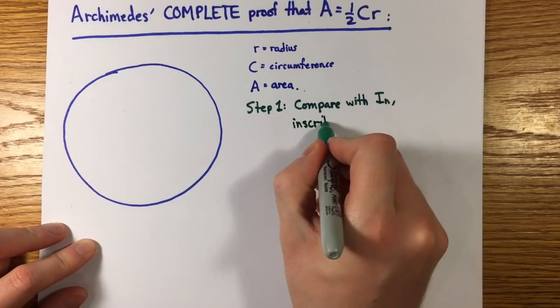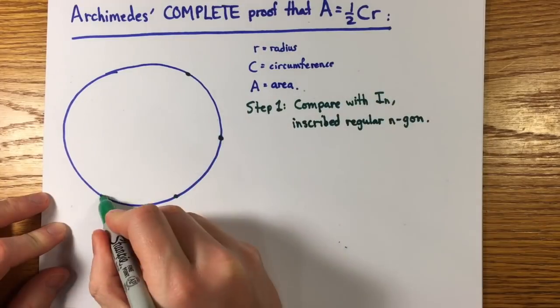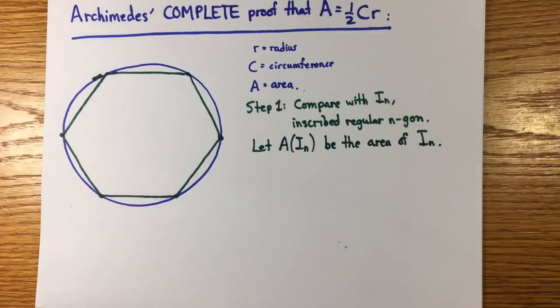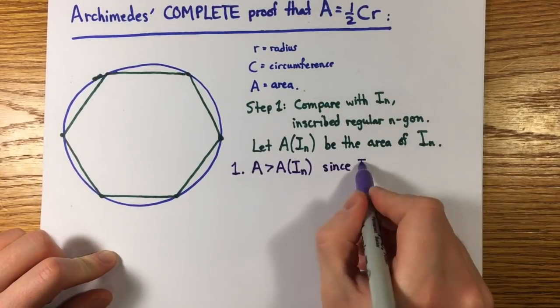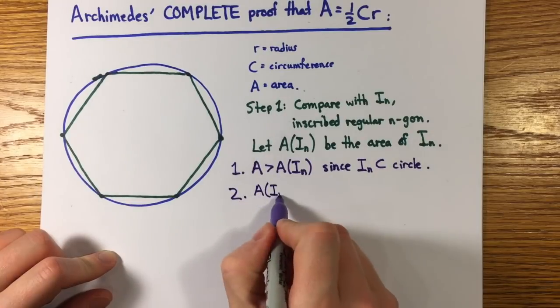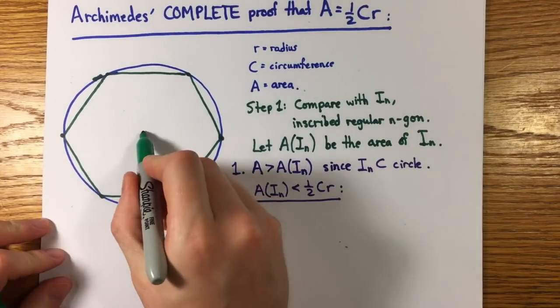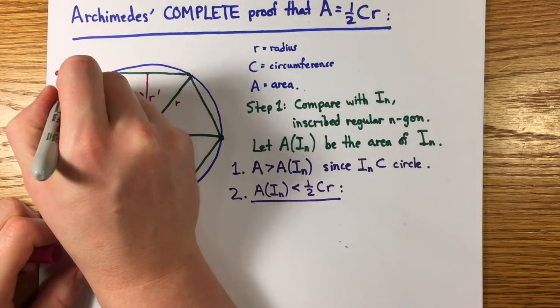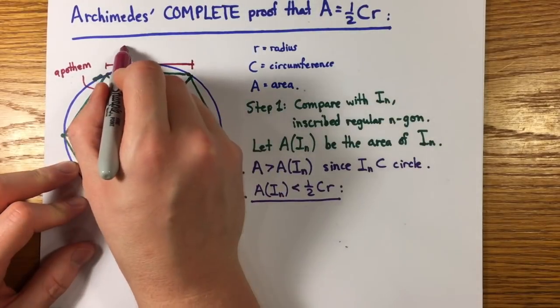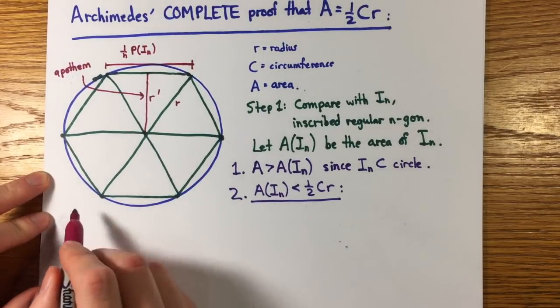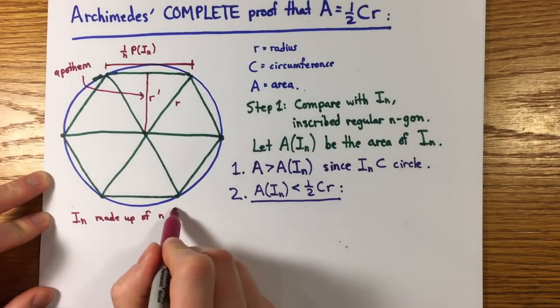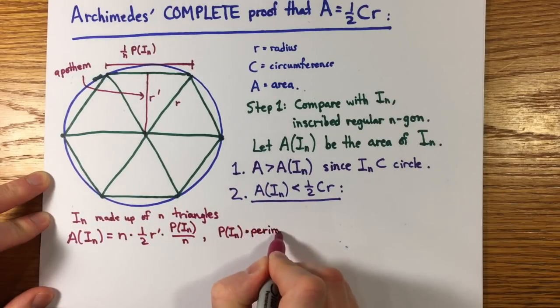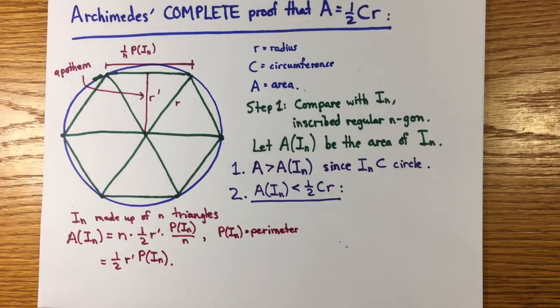Step one, let's compare the area A with the area A of i n of a regular polygon inscribed on the circle. I'll just draw a hexagon. Its area is smaller than A because it's contained in the circle, and I'll also show that A of i n is less than one half cr. In fact, we can calculate its area by dividing into triangles. This length r prime, that's the height of a triangle, actually has a name. It's called the apothem, if you want to know. There are n triangles, each with height r prime and base, one nth the perimeter p of i n. So A of i n is one half r prime p of i n.